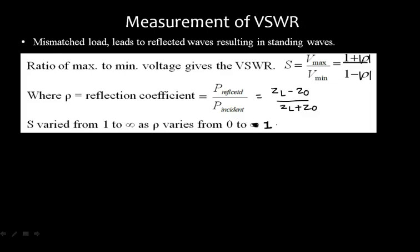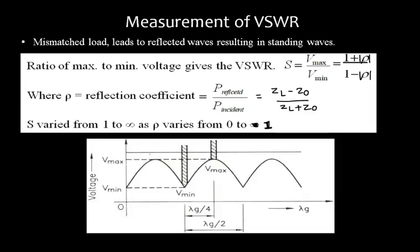Because of the incident and reflected waves, standing waves form inside the transmission line, which acts as a waveguide. There is a maximum voltage called V maxima and a minimum voltage called V minima. The distance between two successive maxima or minima is half of the complete cycle, and the full cycle is called the guide wavelength — the wavelength inside the waveguide.